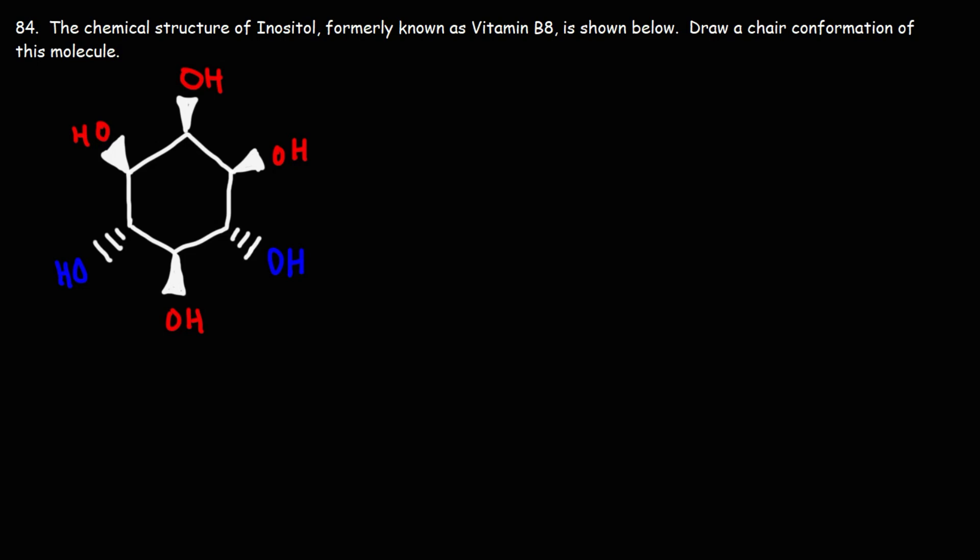Number 84. The chemical structure of inositol, formerly known as vitamin B8, is shown below. Draw a chair conformation of this molecule. So let's draw it this way.